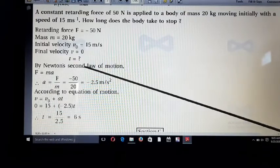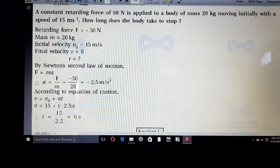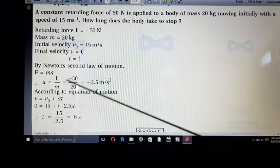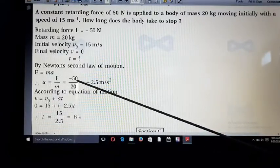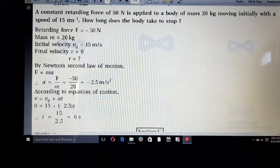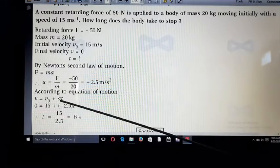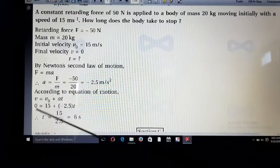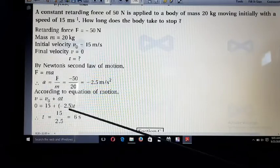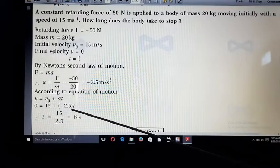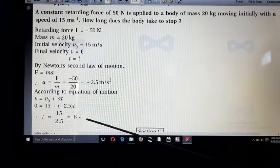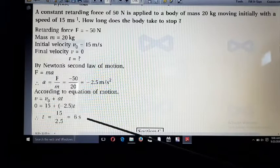Now we want to find out time. First of all, Newton's second law, we can write F = ma. So first we can find out the value of acceleration. Acceleration a = F/m, minus 50 divided by 20, so we get minus 2.5 meter per second square. And now, we have equation of motion, v = v₀ + at. V is final velocity 0, v₀ initial velocity 15, a equals minus 2.5 and t. So this term to left hand side converts to positive. Now we find t, so t = 15/2.5 means we get 6 seconds. After 6 seconds it stops.